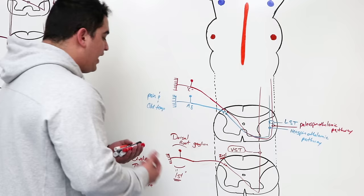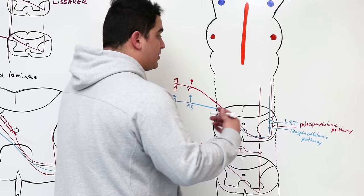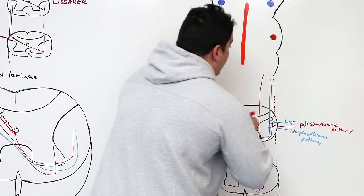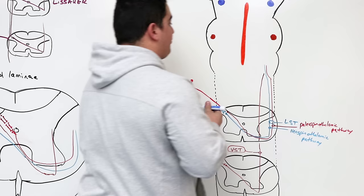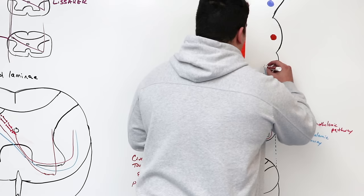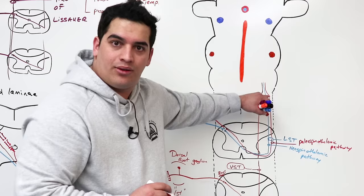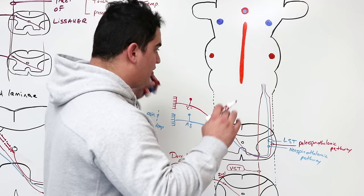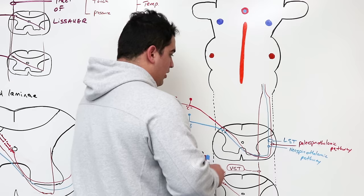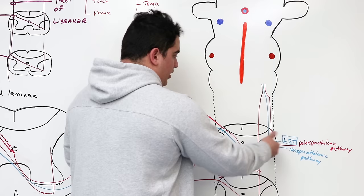All of these pathways come together as one big system — the anterolateral system. We have the ventral spinothalamic tract and the lateral spinothalamic tract, which is broken up into the paleospinothalamic pathway (C fibers) and the neospinothalamic pathway (A-delta). Some books refer to this entire group as the spinal lemniscus.